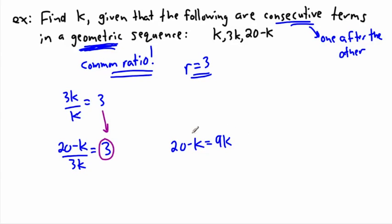Now I want to solve for K. Maybe I want to move this one to the right. The opposite of minus K is plus K, so I'll add K to both sides. That would get rid of it here, so I just have 20. And 9K plus 1K would be 10K.